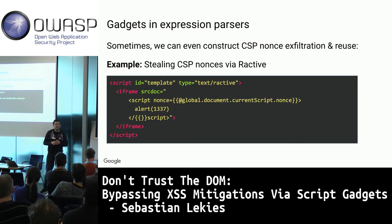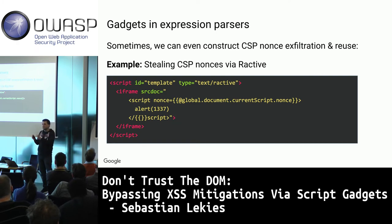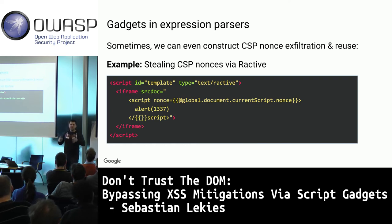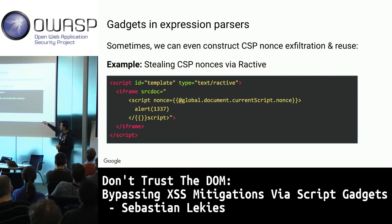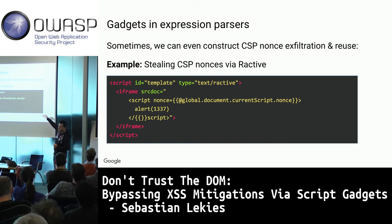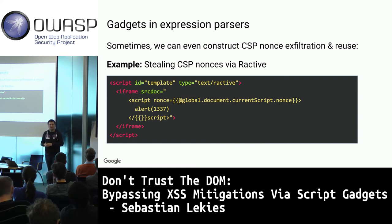We can also bypass nonce-based CSP. The attacker injects a script tag but doesn't know the nonce at injection time. Using an Aurelia expression on the nonce attribute, you tell the framework to insert the nonce — it goes to the document, gets the current script's nonce (the Aurelia script), and adds it to your injected script. You end up with a valid script that bypasses the policy.